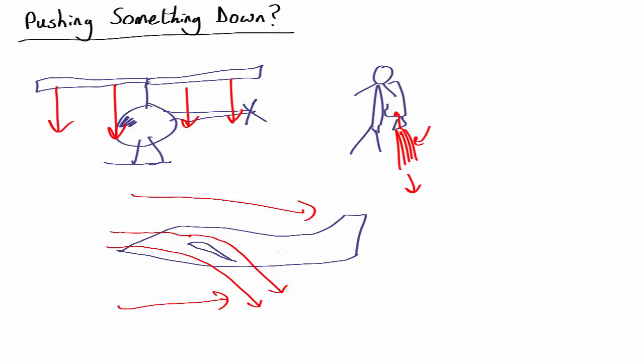So once again, you're accelerating air downwards. Therefore, there must be an equal and opposite force pushing upwards that holds the wing and hence the plane in the air.